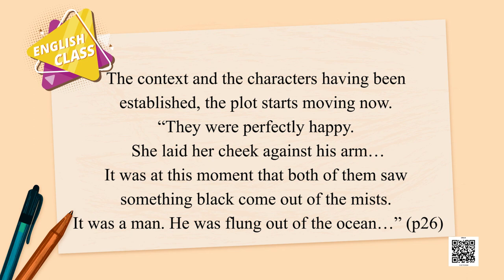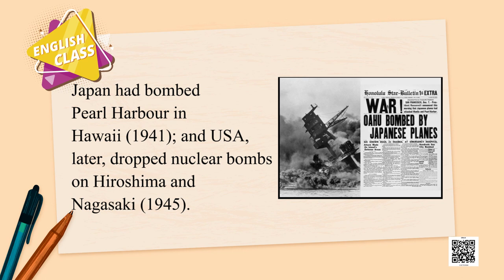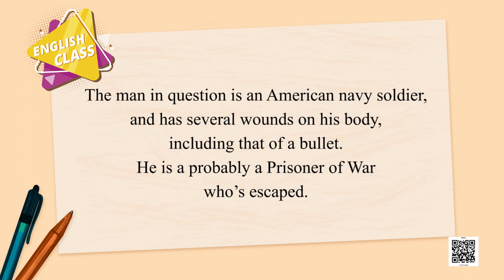The context and characters having been established, the plot starts moving. They were perfectly happy when suddenly the plot takes a turn — both of them saw something black come out of the mists. It was a man, flung out of the ocean. The backdrop of the story is World War II, when Japan was at war with America. Japan had bombed Pearl Harbor in Hawaii in 1941, and the USA later dropped nuclear bombs on Hiroshima and Nagasaki in 1945. The man swept to shore is an American navy soldier with several wounds, including a bullet wound — possibly a prisoner of war who has escaped.